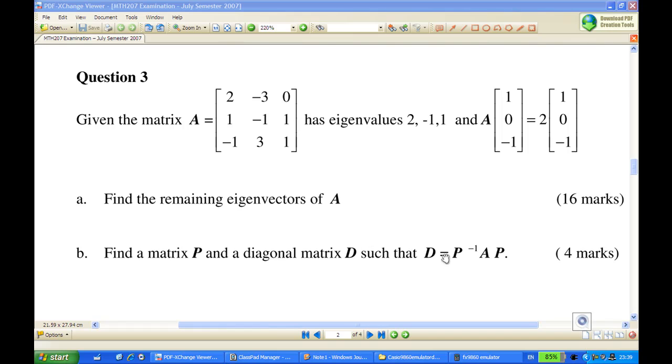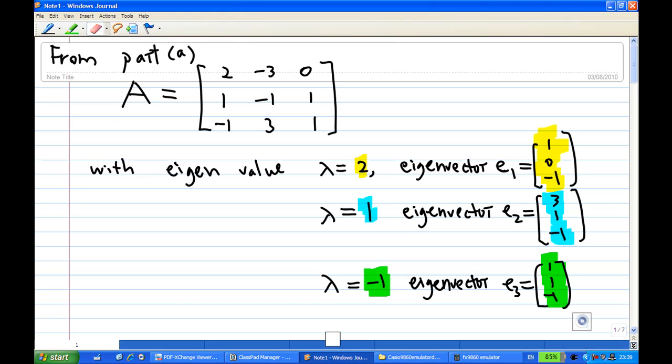How do we do this? Alright, we must know some result of how to find P. In this case, from part A, we know that given the matrix A.